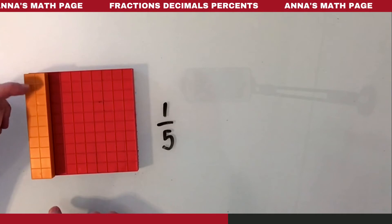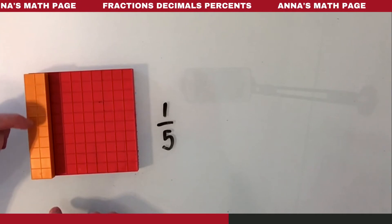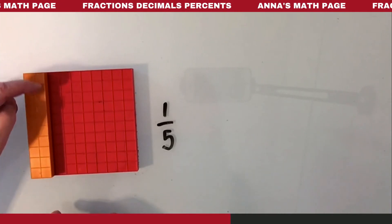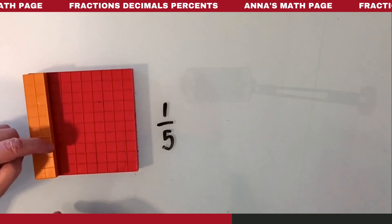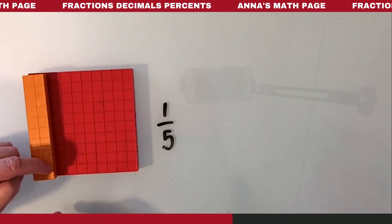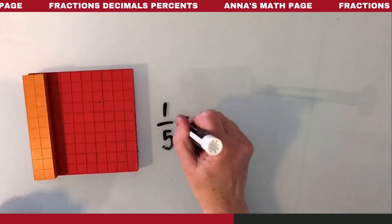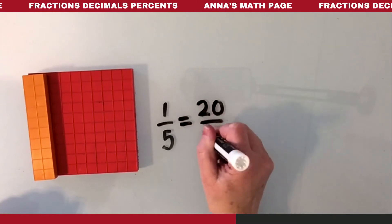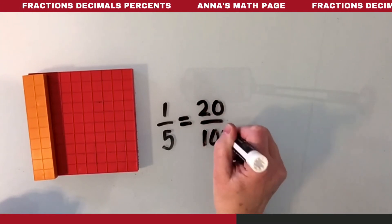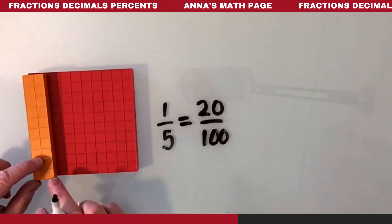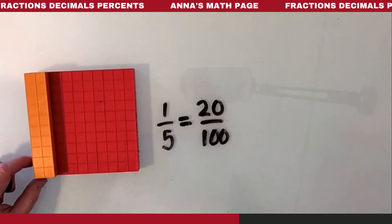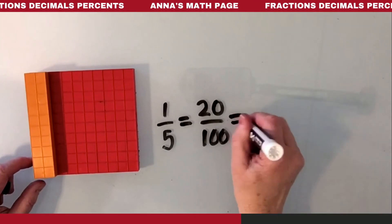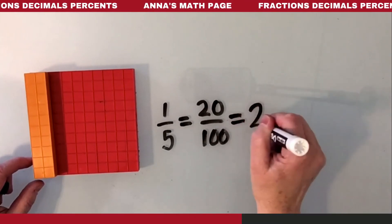Because you can count this — counting 1 through 20 — that's the same as 20 squares out of 100 squares. You can see I don't have all the squares; I only have 20 of them. And that is the same as 20 percent.